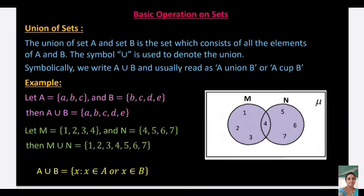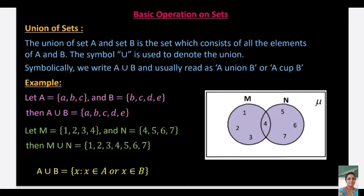Another union example: M = {1, 2, 3, 4} and N = {4, 5, 6, 7}, then M ∪ N = {1, 2, 3, 4, 5, 6, 7}. Common elements are written once only. The set builder form of union: A ∪ B = {x : x ∈ A or x ∈ B}, meaning x belongs to A or x belongs to B.